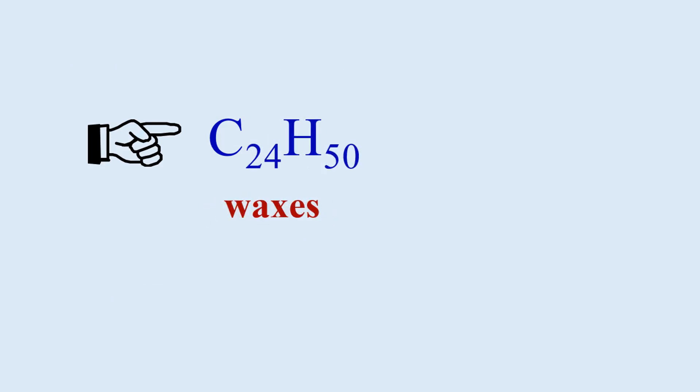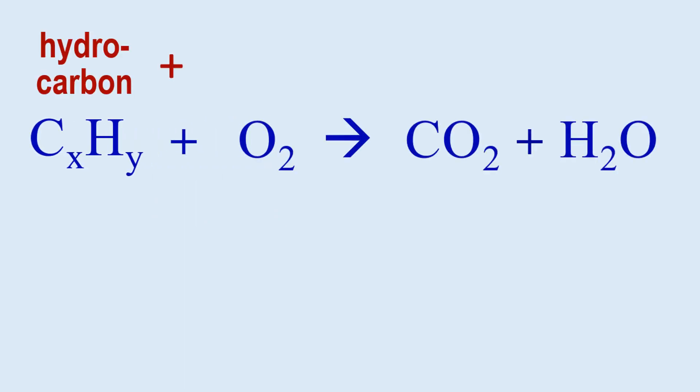Octane and waxes have in the vicinity of 24 carbons, and there are many, many more. If any of them react with oxygen, then the products are carbon dioxide and water.